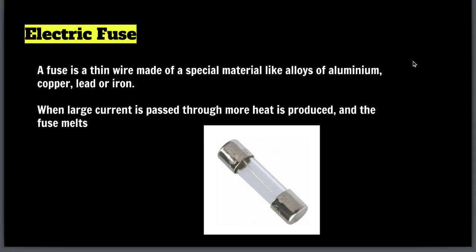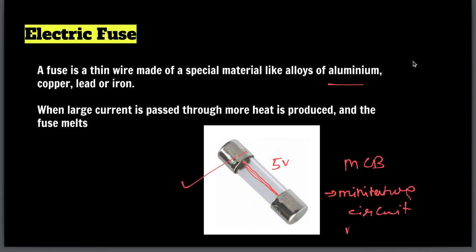The next application is the fuse. A fuse is a thin wire made of aluminum, copper, or lead alloys. When a very high current passes — for example, more than 5 amperes — the wire melts and breaks the circuit, cutting off the light. This is old-fashioned and has been replaced by MCBs — miniature circuit breakers — which are used today.